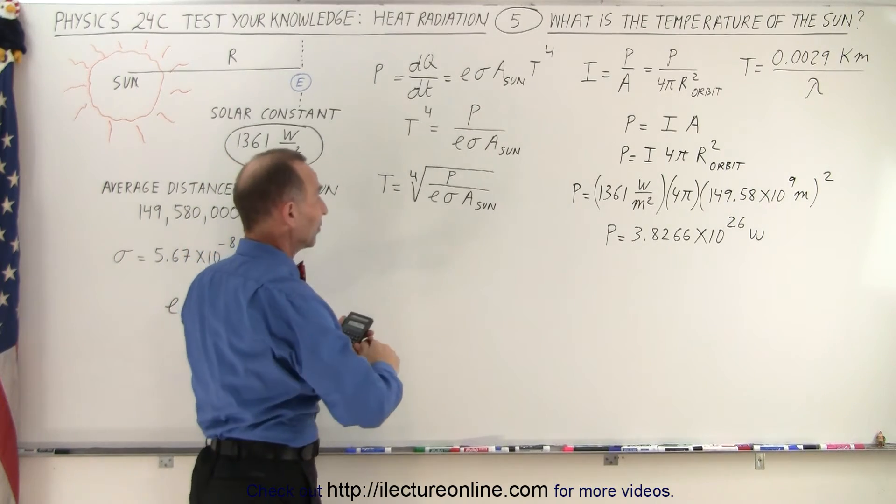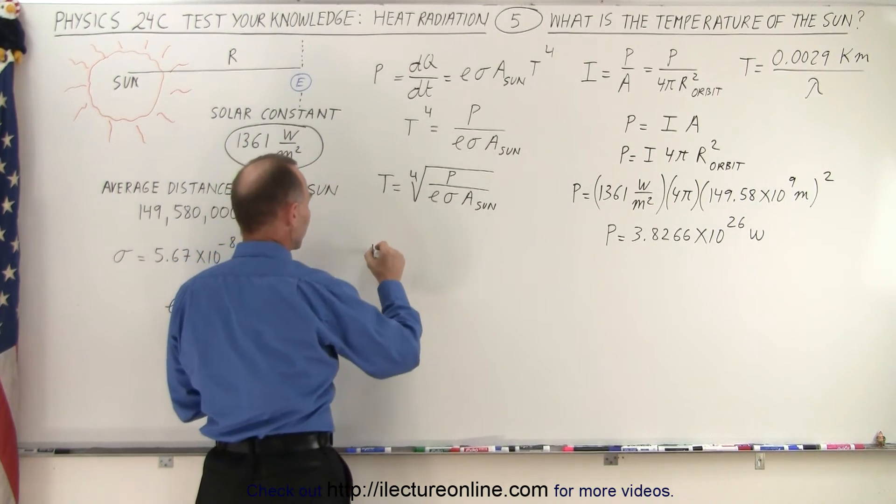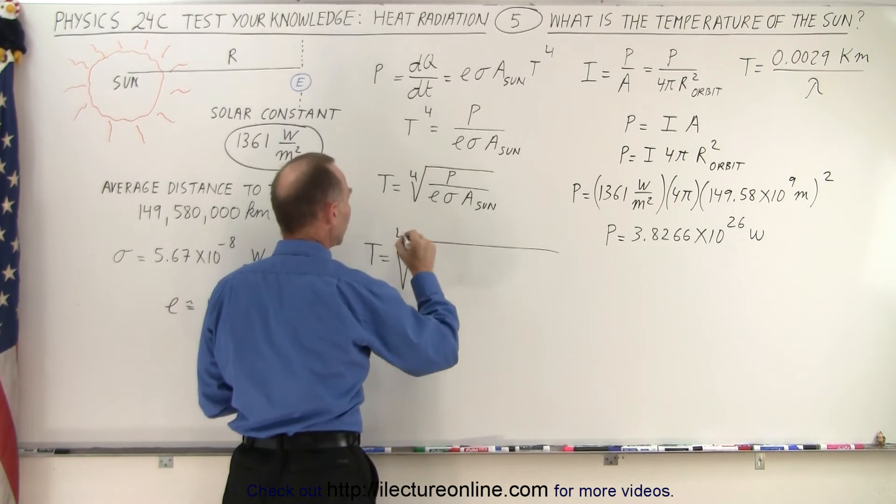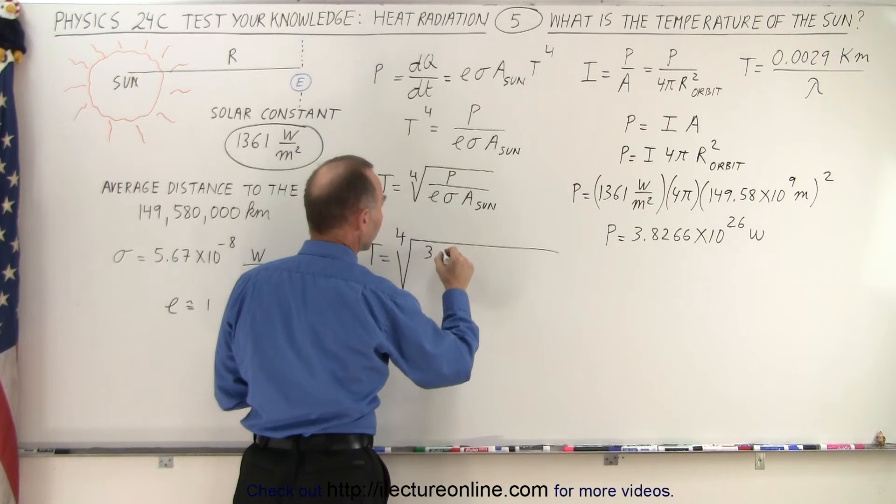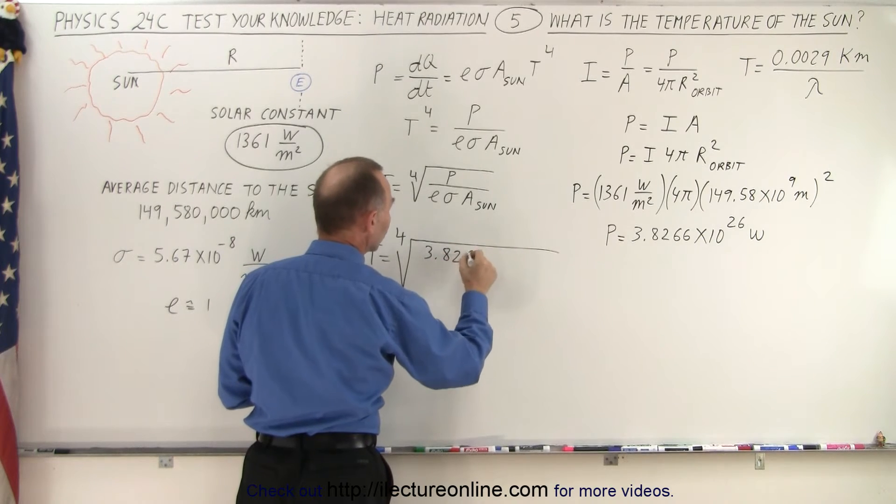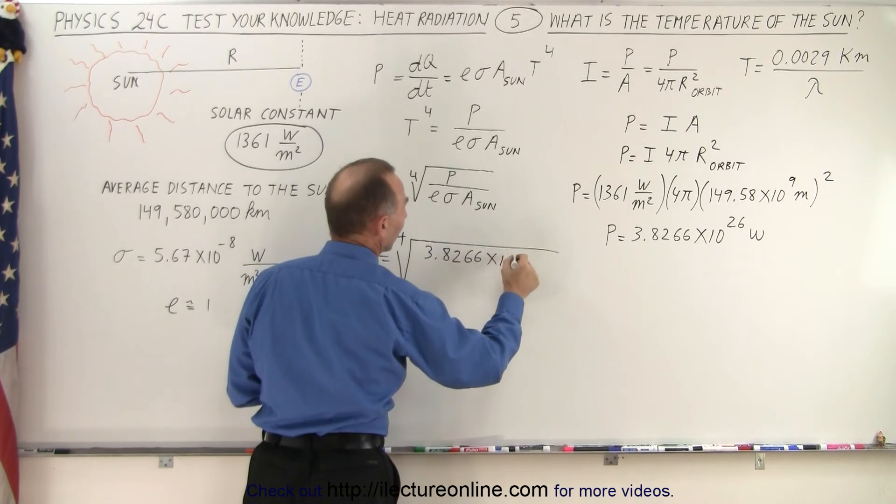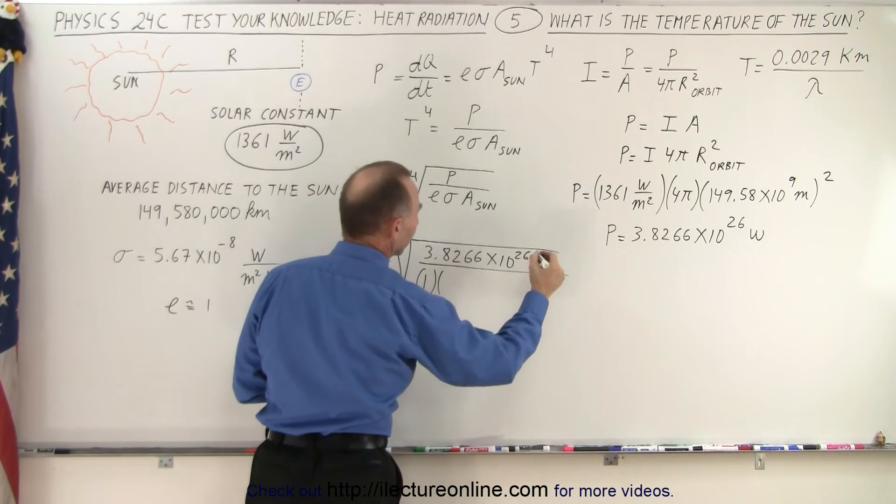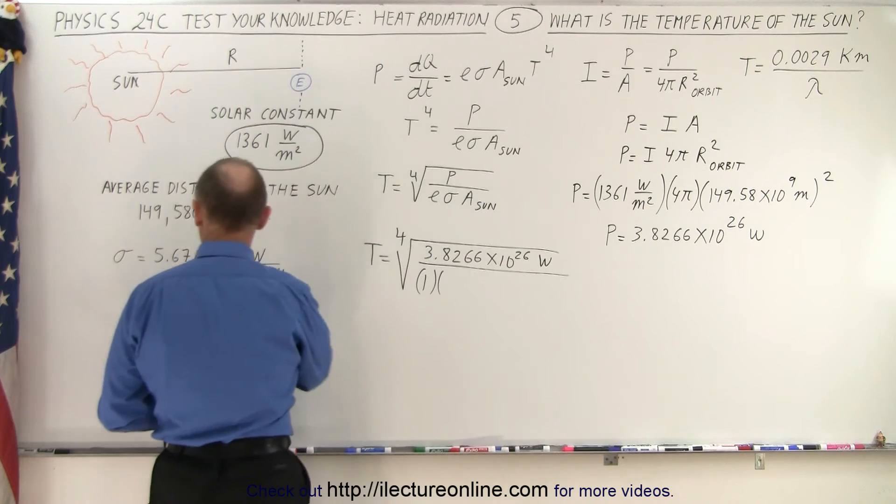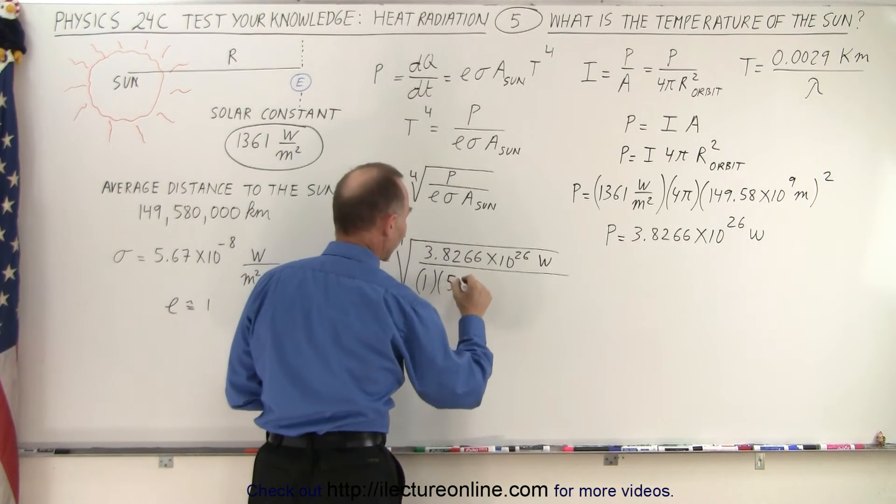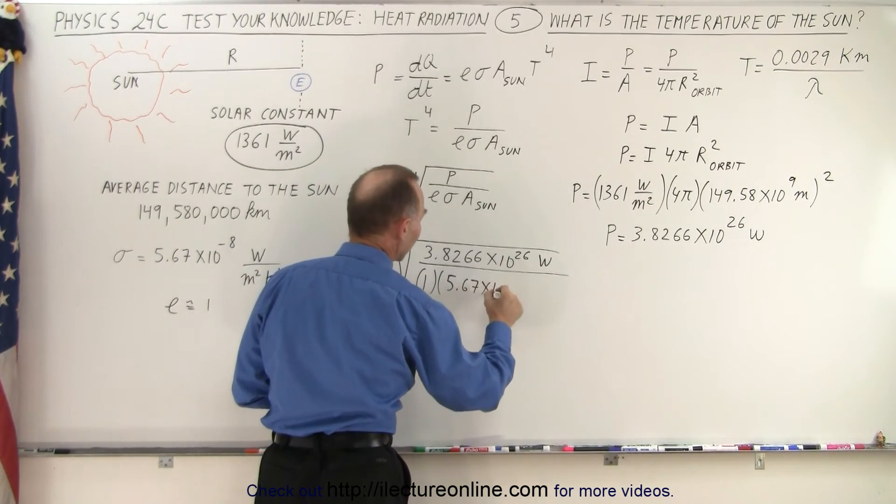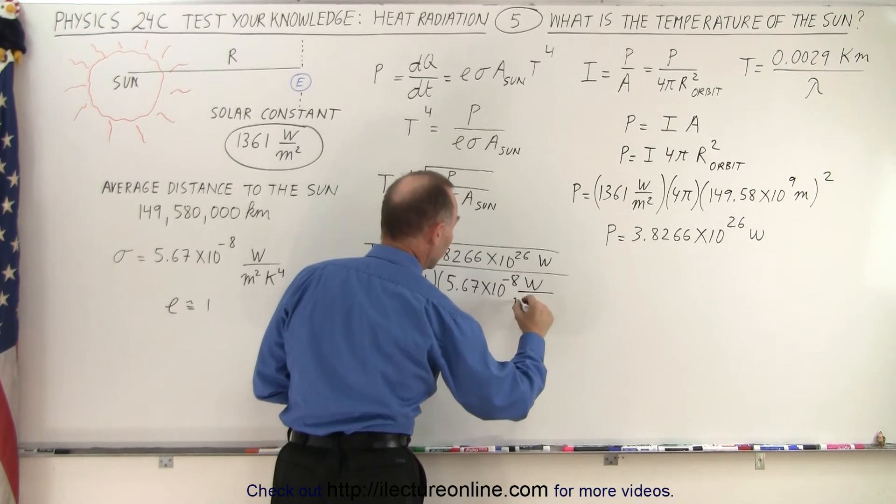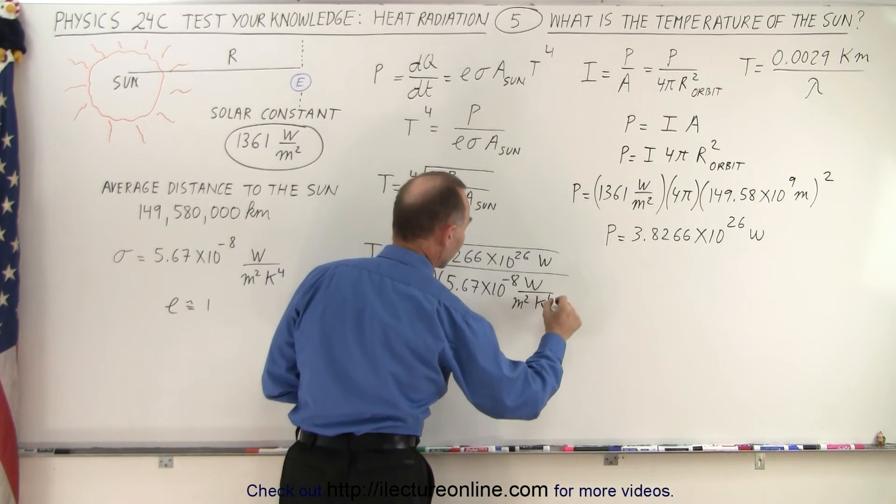Now we're going to plug that in here and see what we get. So that means that the temperature is equal to the fourth root of the power, 3.8266×10²⁶, divided by emissivity—let's call it 1 (that would be watts)—and sigma is 5.67×10⁻⁸, that would be watts per meter squared times Kelvin to the fourth power.